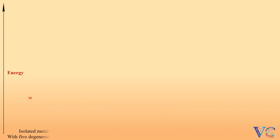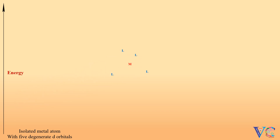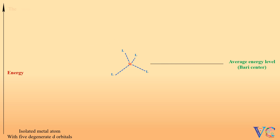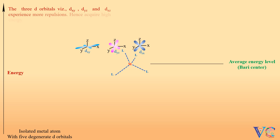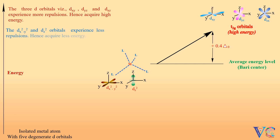Isolated metal atom with five degenerate d orbitals. As a consequence, the metal acquires a little higher energy. There takes place interactions between the metal ion and ligands. As a consequence, splitting of d orbitals takes place. The three d orbitals — dxy, dyz, and dzx — experience more repulsions, hence acquire high energy. The dx²-y² and dz² orbitals experience less repulsions, hence acquire less energy.